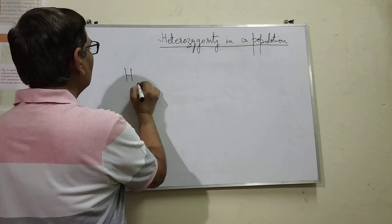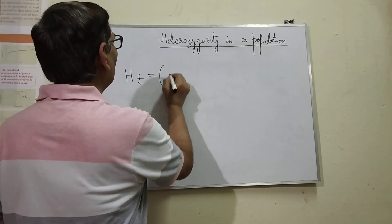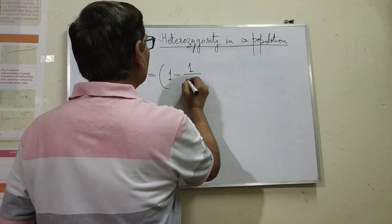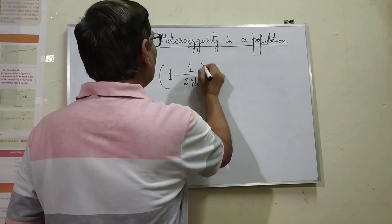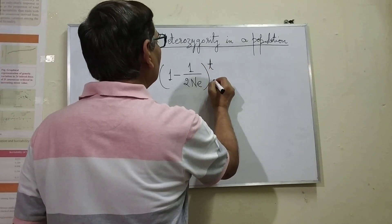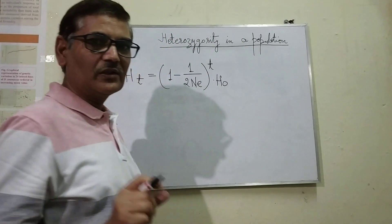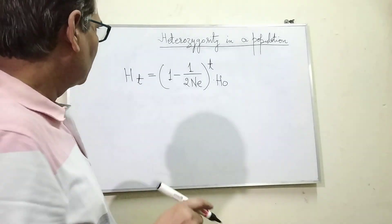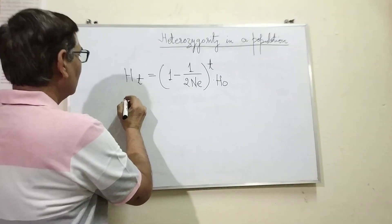That formula is: Ht equals 1 minus 1 divided by 2Ne, to the power t, into Ho. This is a simple formula by which we can measure heterozygotes.